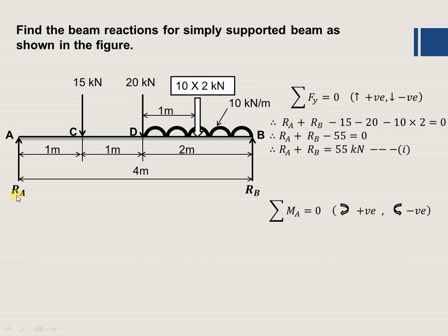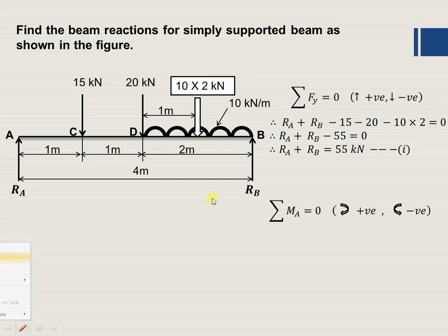Now apply the second condition of equilibrium: summation of moments about point A equals 0. The convention is that clockwise moments are positive and anticlockwise moments are negative. Starting with RB, it produces an anticlockwise moment about A.